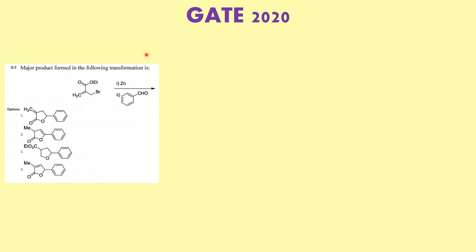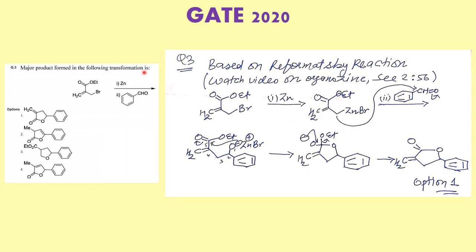The first question was entirely based on the Reformatsky reaction. I made a video on organo-zinc chemistry; the link is in the description. If you go to 2 minutes 56 seconds, this exact problem is discussed. An organo-zinc species attacks the aldehyde, followed by intramolecular cyclization to give a lactone. The correct answer in this case was option one — a straightforward problem on the Reformatsky reaction.